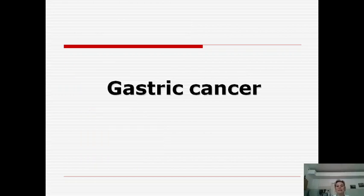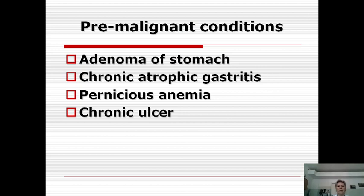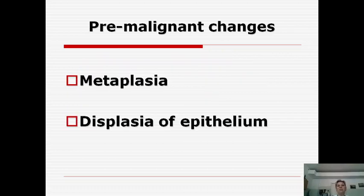Next, information about gastric cancer. Pre-malignant conditions include adenoma or adenomatous polyps of the stomach, chronic atrophic gastritis, pernicious anemia as a result of chronic atrophic gastritis, and chronic ulcer. Pre-malignant cellular changes include metaplasia — we can see the appearance of intestinal cells with intestinal metaplasia — and dysplastic changes in the epithelium of the stomach glands.